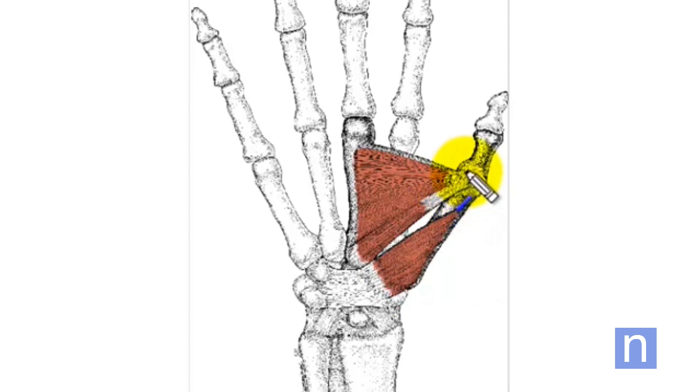And in fact it extends over the joint, the metacarpophalangeal joint of the thumb. The action of this muscle, as it says, is to pull the thumb in towards your hand, and this it does in the plane of your hand.